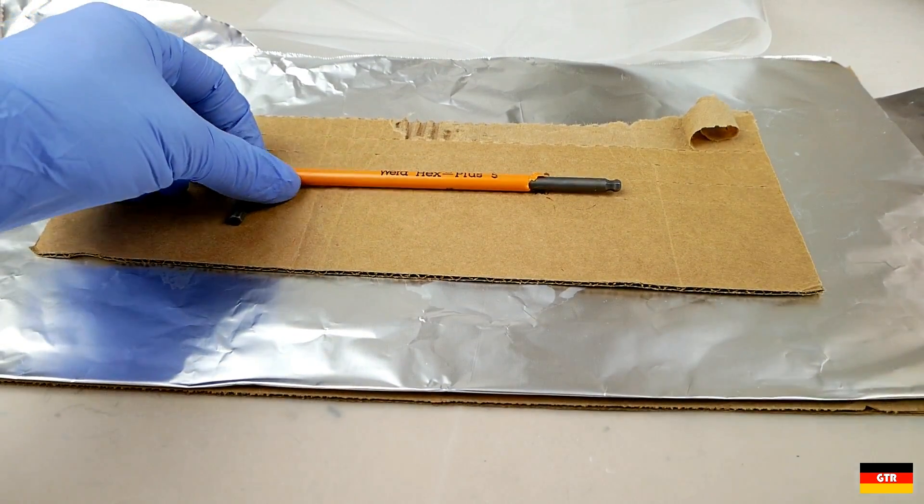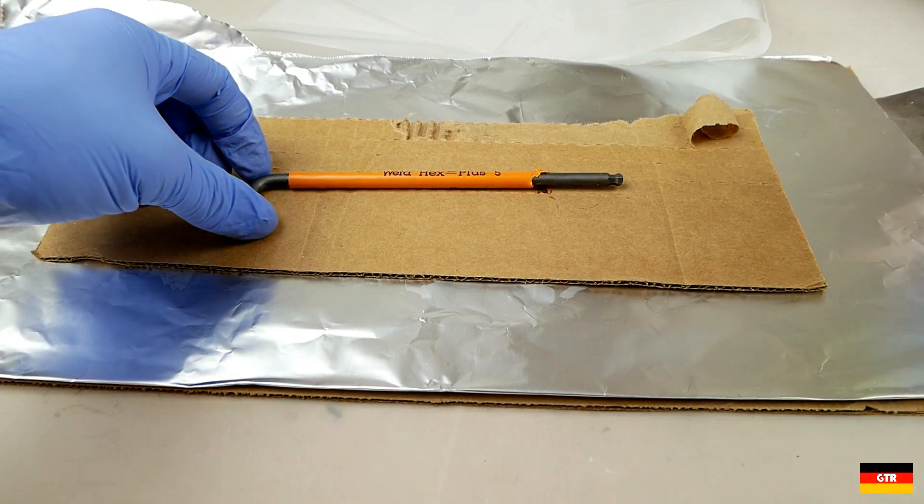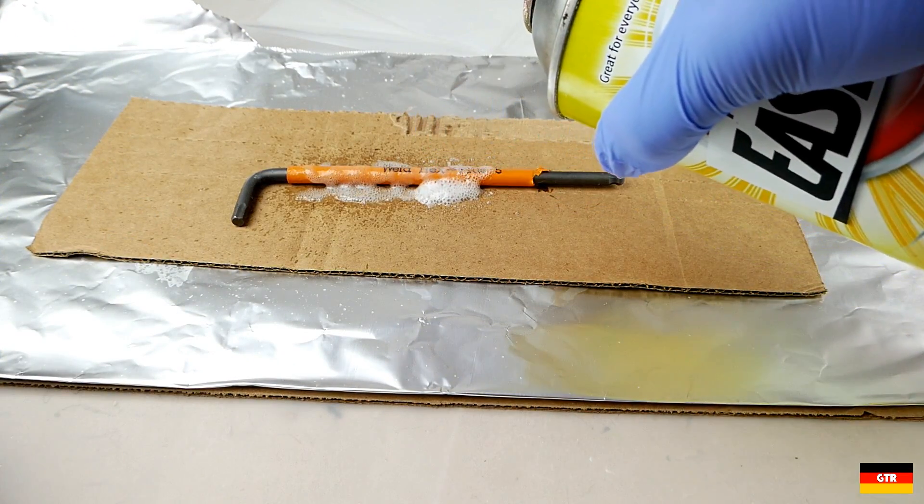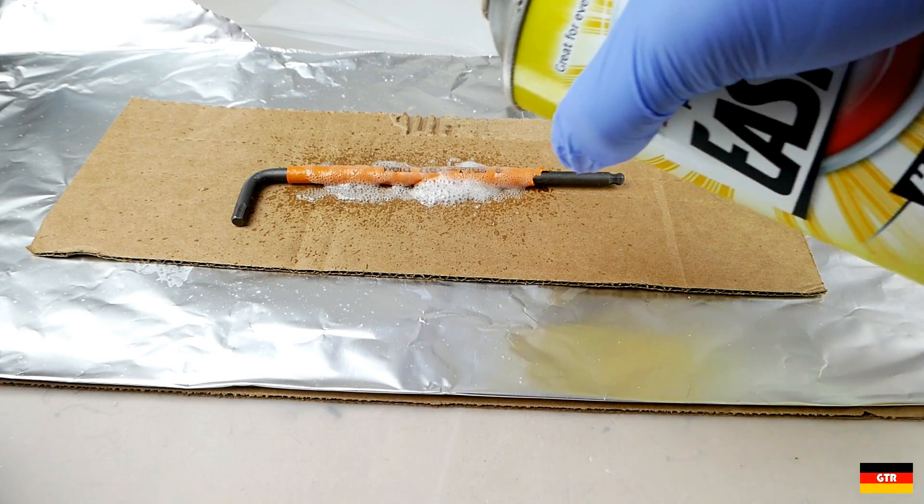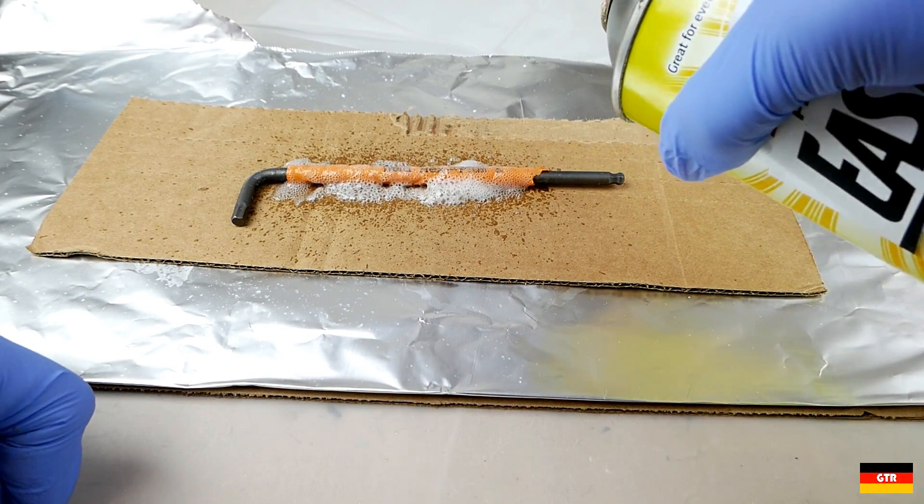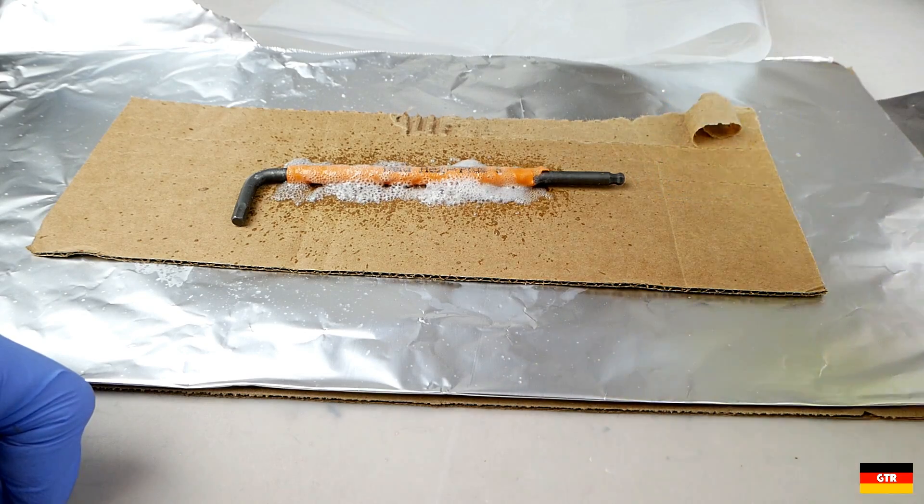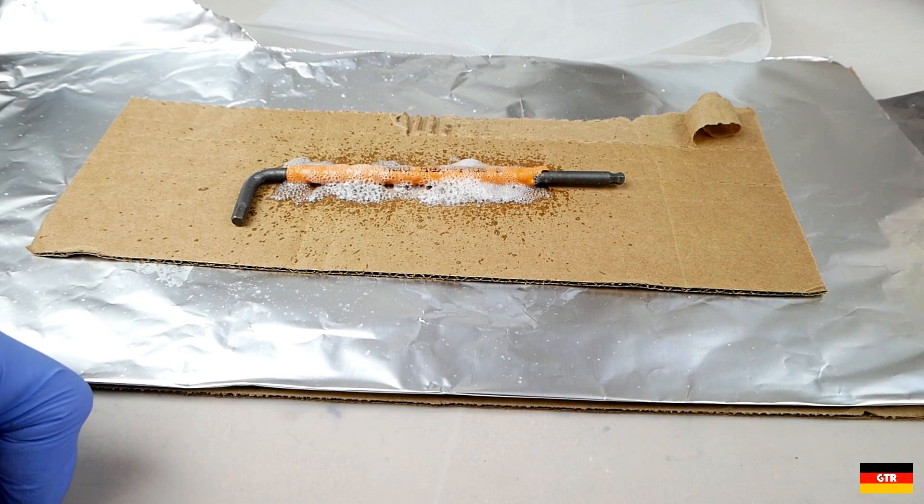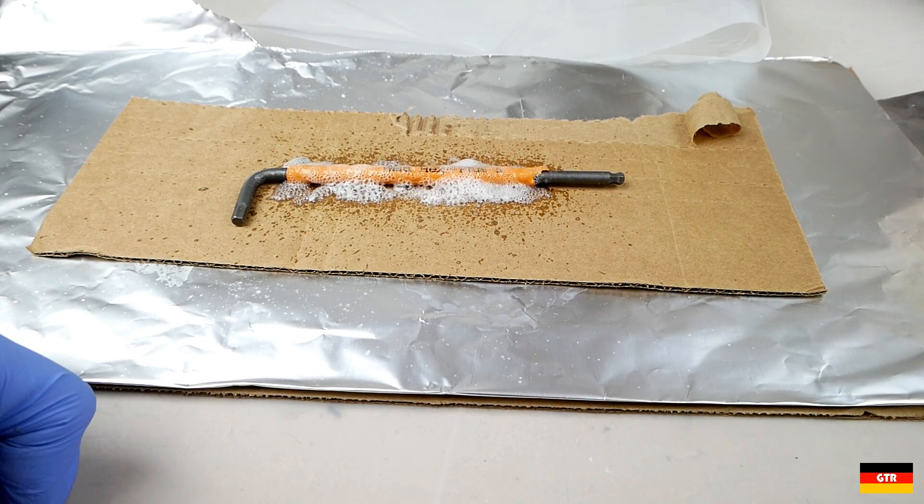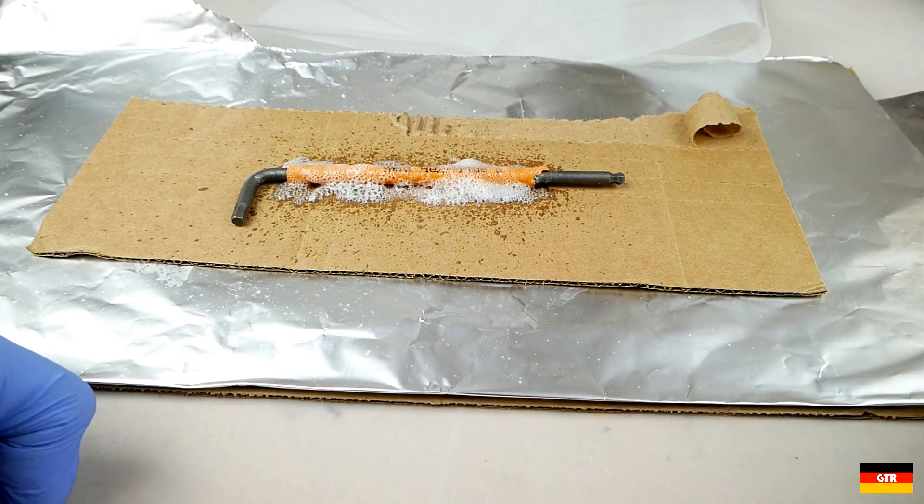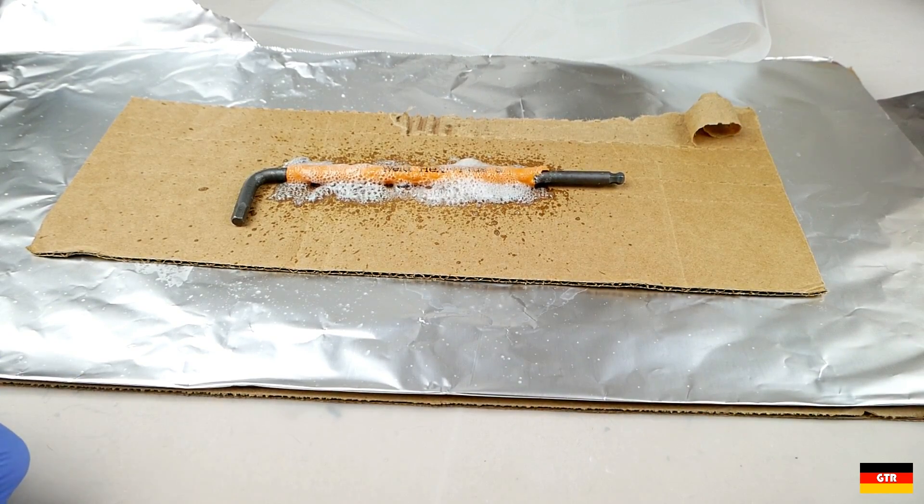Alright so next thing I'm going to try is some oven cleaner. Now oven cleaner, you can even use this stuff to remove plating, brass plating. So if this doesn't do it then I don't think I have anything stronger than oven cleaner to use. So we'll see if this actually does anything.